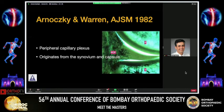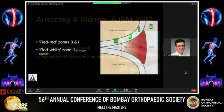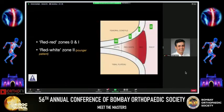Arnoczky and Warren, almost 40 years ago, explained the vascularity of the meniscus in the peripheral third via the peripheral capillary plexus, and hence we divide the meniscus into zones based on the vascular pattern. Zone 0 is the perimeniscal capillary plexus. Zone 1 is the red zone, zone 2 is the red-white zone, and zone 3 is the white zone. Zone 0, zone 1, and some zone 2 repairs are amenable for surgical repair.